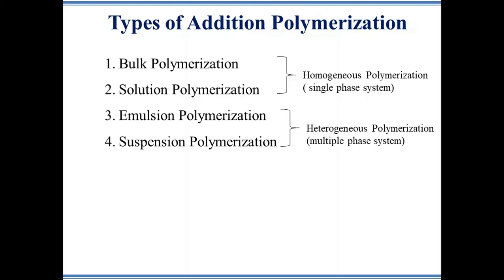The term homogeneous or heterogeneous refers only to the initial condition of the system. For example, emulsion and suspension polymerization involve hydrophilic and hydrophobic reactants in the reaction mixture, which makes the reaction mixture heterogeneous. Whereas bulk and solution polymerization take place in one phase and therefore are called homogeneous polymerization.